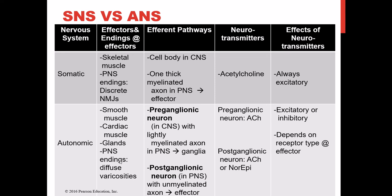Cells innervated by the ANS have gap junctions so they can communicate with one another. For the somatic nervous system, the pathway is one heavily myelinated axon that extends from the central nervous system all the way out through the peripheral nervous system to the effector organ — the skeletal muscle. The cell bodies for these somatic neurons are all in the central nervous system, so the neuron that innervates your toes has its cell body in the lower spinal cord.